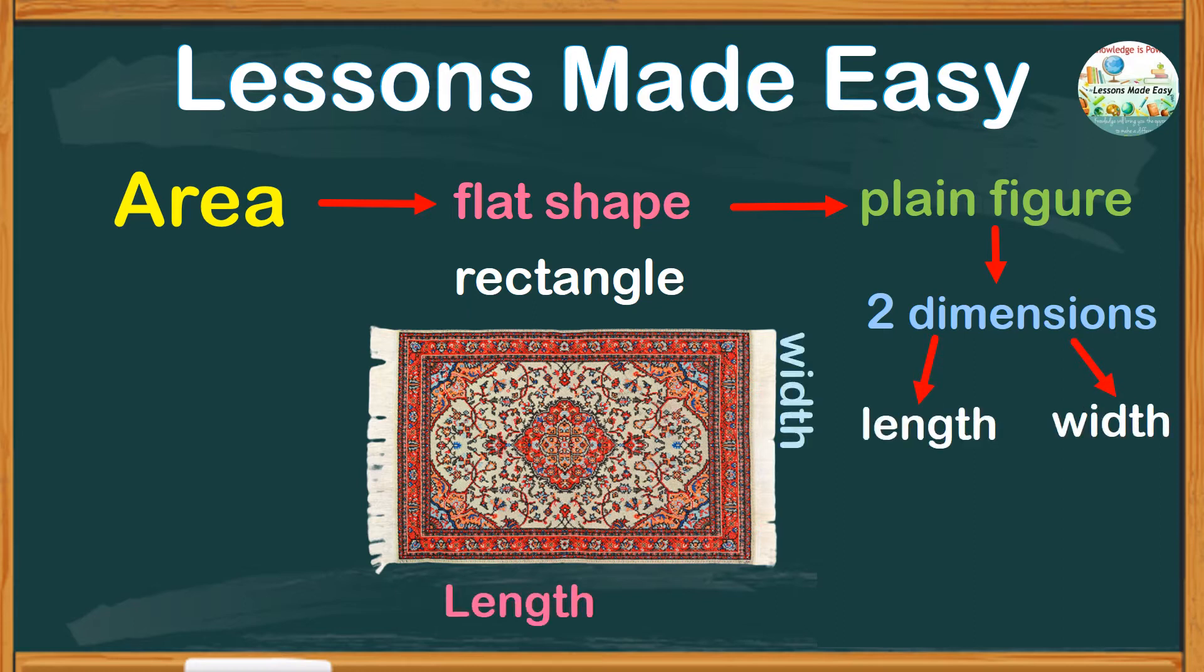Now, suppose the length and the width are measured in centimeter as a unit. To find the area, you simply multiply the two measurements. As you can see, we use the unit CM twice. So for the answer, it comes with a unit CM raised to the power of 2. So area is expressed in square units.